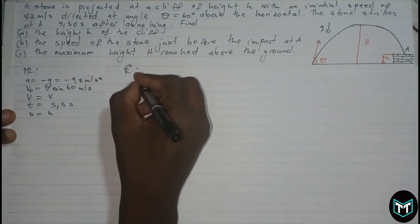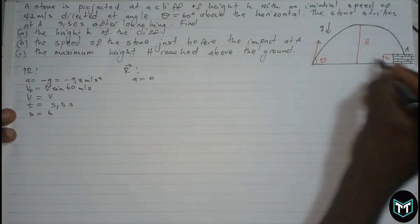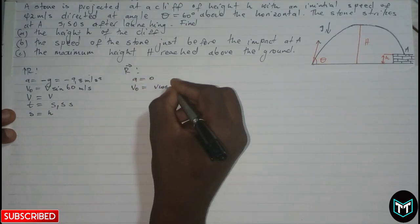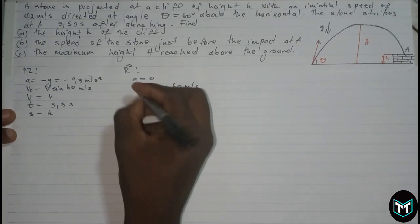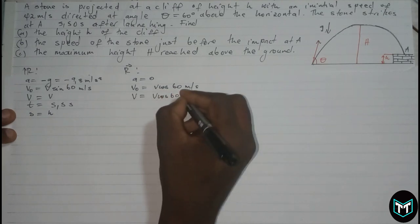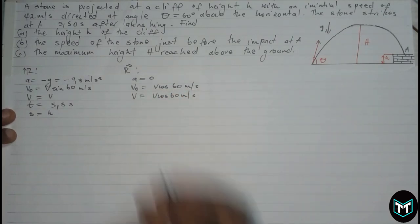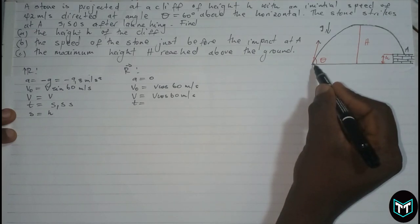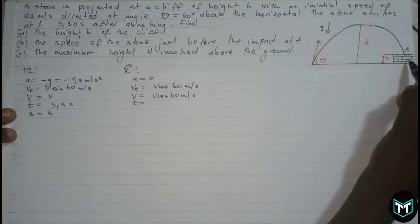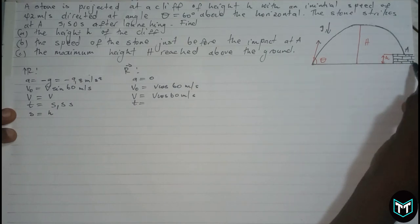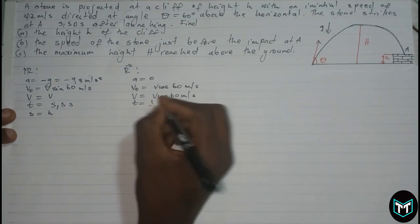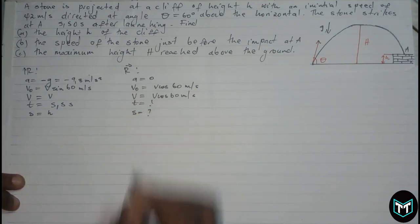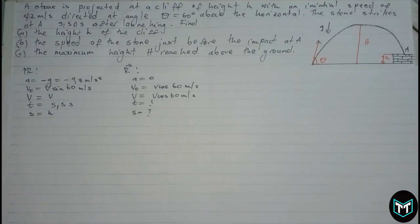Resolving horizontally: acceleration is going to be zero — we have no acceleration in the horizontal direction. The initial velocity is v cos theta, so v cos 60 meters per second, and the final velocity is also v cos 60 meters per second, because acceleration equals zero. We don't have the time from the initial horizontal position to the ground, and we don't have the horizontal distance.